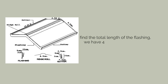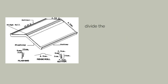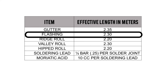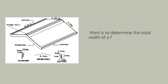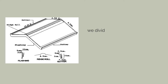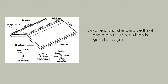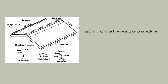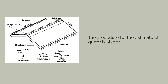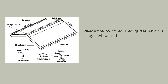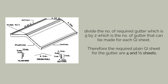For the estimate of the flashing, the procedure is the same as for ridge, hip, and valley rolls. First, find the total length: 4.5 multiplied by 4 equals 18 meters. Second, divide by the effective length of a flashing, which is 2.30 meters: 18 divided by 2.30 equals 5.65, so we say 6 pieces. Third, the total width of flashing is 0.45 meter. Fourth, dividing 0.90 by 0.45 gives 2 flashings per GI sheet. Last, divide 6 by 2 — result is 3 plain GI sheets for flashing. For the gutter estimate, divide the required gutter number of 9 by 2, giving 4.5 plain GI sheets for the gutter.